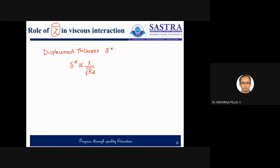Based on the reference temperature method, the Reynolds number is based on the average properties within the boundary layer. So we can write that delta star is proportional to an expression involving mu*.